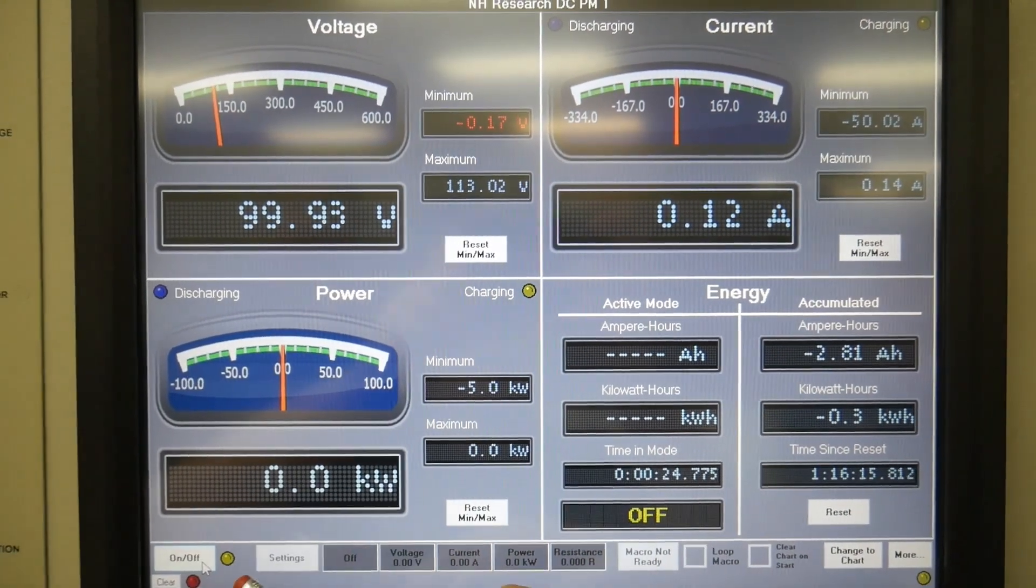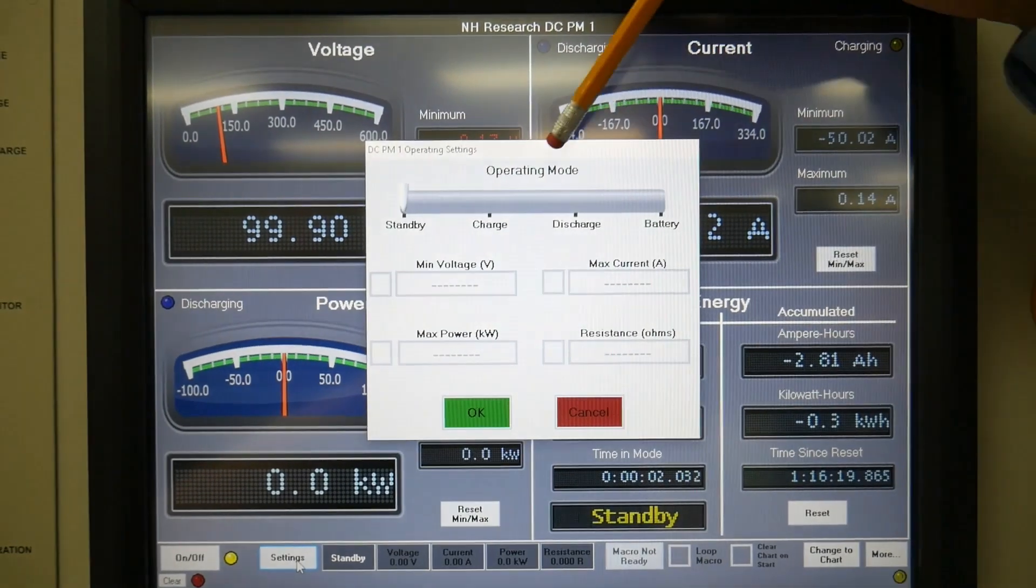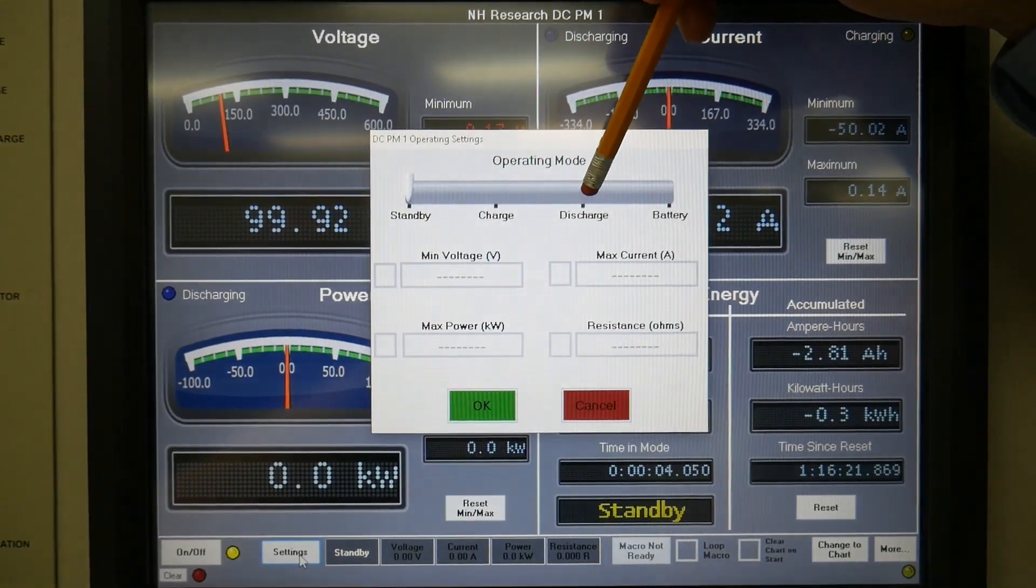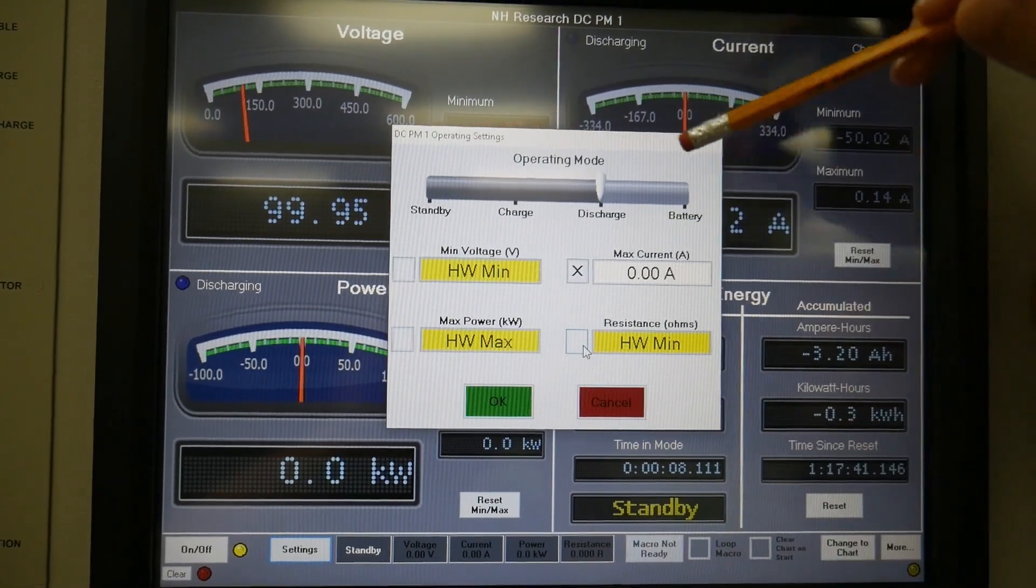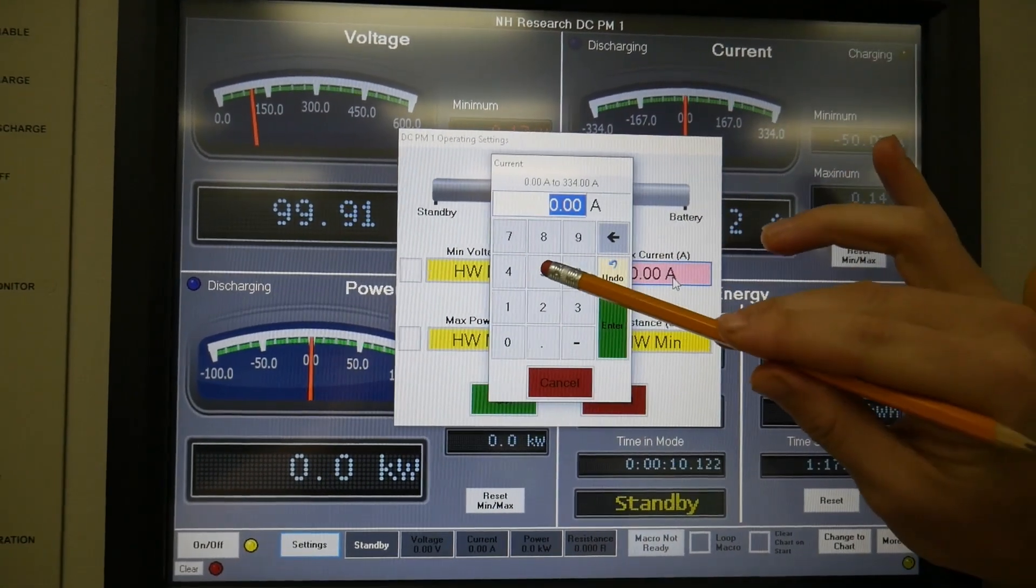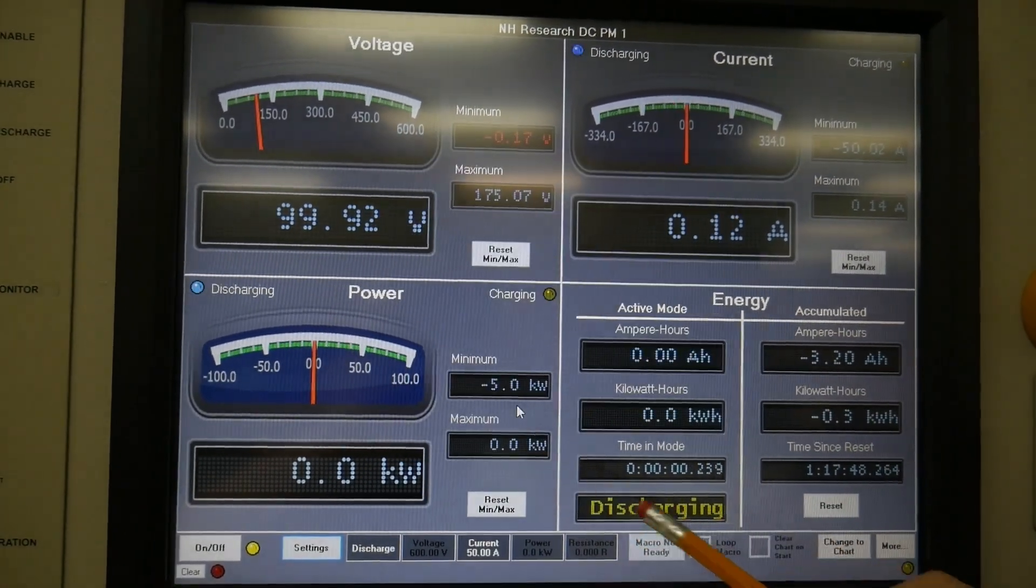To set the unit in discharge mode you would turn it on, hit settings, change the operating mode to discharge. Here we are using the NH-Research 9300 as a DC load drawing 50 amps. Limits will depend on your DUT test and specs.